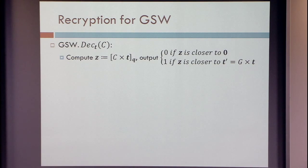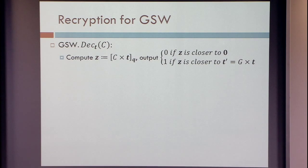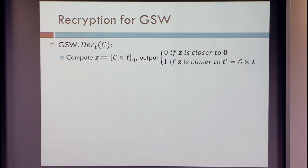Can we actually make use of it? Do we have encryption schemes that are bootstrappable — where we can evaluate the decryption procedure? Let's try to do that for the GSW scheme. Can we evaluate the decryption procedure of GSW? The decryption procedure: you have a matrix C, you have a secret key which is a vector T, you do a matrix-vector multiplication mod Q, and then you check whether the result is closer to zero or closer to T prime, which is G times T.